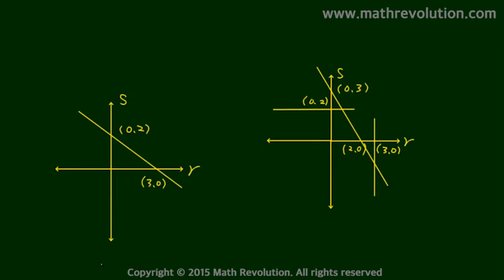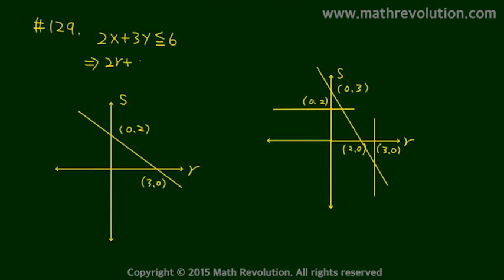Let's take a look at question number 129 on the DS section of GMAT Official Guide 2015. We want to find the point on or less than 2x plus 3y equals 6, which means the question is asking whether 2r plus 3s is going to be less than or equal to 6.